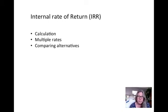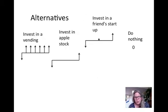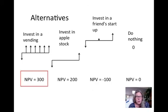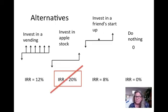Next we look at comparing alternatives. Internal rate of return is not the best method to use — one reason is multiple interest rates, and another is that comparing alternatives requires incremental analysis. For example, given multiple investment options with their net present values calculated, the NPV rule says choose the highest NPV, which would be investing in vending. But if we used internal rate of return and picked the highest IRR, we might say invest in Apple stock — and that would actually be the wrong choice.